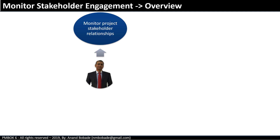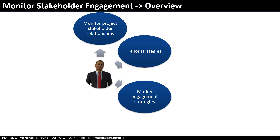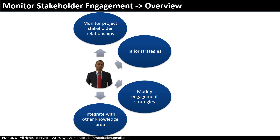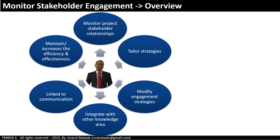The key activities involved in this process are: monitoring project stakeholder relationships, tailoring strategies to deal with various stakeholders, modifying engagement strategies, integrating with other knowledge areas such as communications and risk management, and maintaining or increasing the efficiency and effectiveness of stakeholder engagement. Stakeholder engagement and communication go hand in hand.